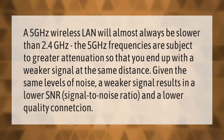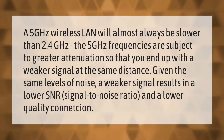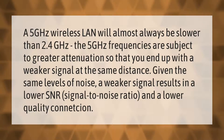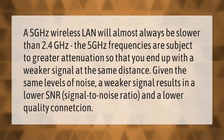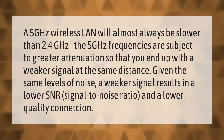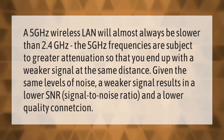A 5 gigahertz wireless LAN will almost always be slower than 2.4 gigahertz. The 5 gigahertz frequencies are subject to greater attenuation, so you end up with a weaker signal at the same distance. Given the same levels of noise, a weaker signal results in a lower SNR (signal-to-noise ratio) and a lower quality connection.